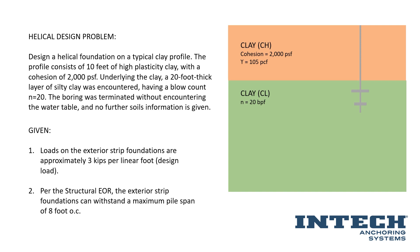We're going to put our helical pile through this high plasticity clay layer because we don't want to have any issues with shrink or swell activity within this upper layer. We're going to presume that we're going to penetrate our helical pile fully through into this low plasticity clay. We've got 10 feet thickness of this high plasticity clay layer, and we're going some amount into this low plasticity clay layer.